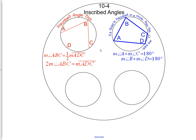So we have a formula. The measure of angle A plus the measure of angle C is equal to 180, and also the measure of angle B plus the measure of angle D also equals 180.